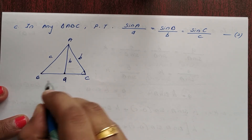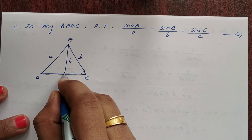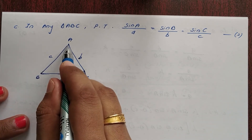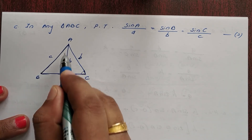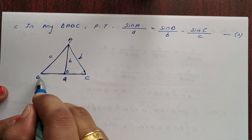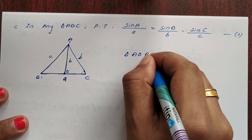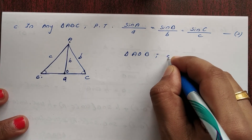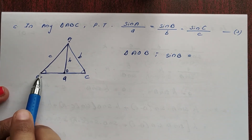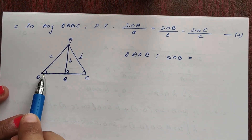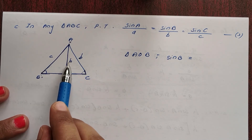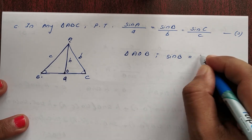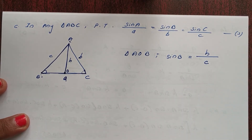In triangle AOB: sin B equals opposite over hypotenuse, that is h divided by c, so h equals c sin B — equation 1. In triangle AOC: sin C equals h divided by b, so h equals b sin C — equation 2.